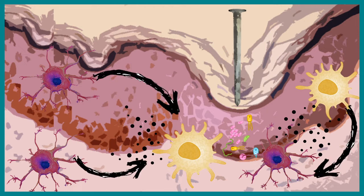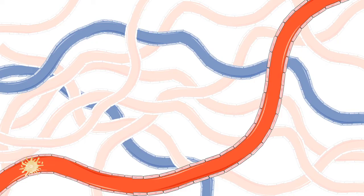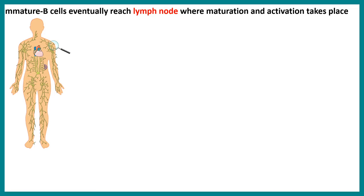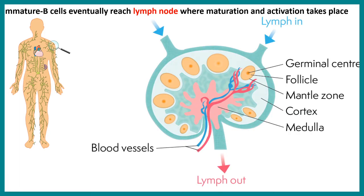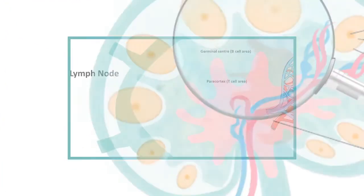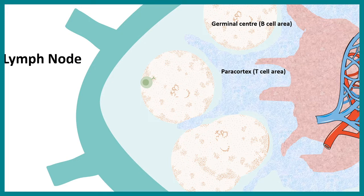Some of these dendritic cells are motile and migrate towards the lymph node, where very important events of the adaptive immune system take place. Inside the lymph node, naive B cells — which have the capability of recognizing pathogens and producing antibodies — are eventually activated. We can zoom into the lymph node and see the germinal center, the follicles for the B cell area, and the paracortex where T cells reside.